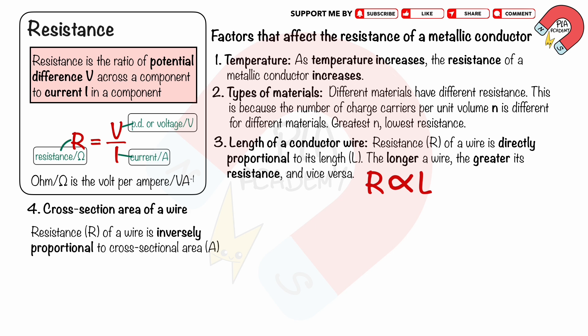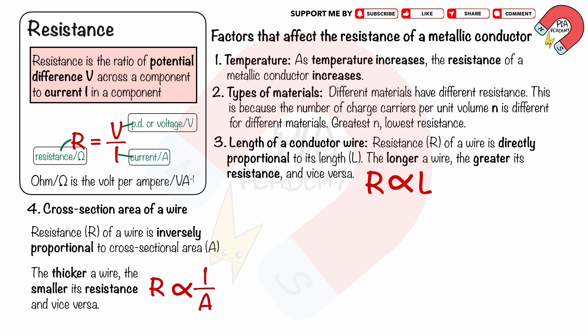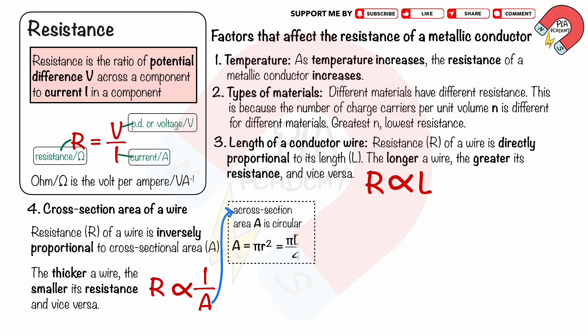Factor 4: Cross-sectional area of a conductor wire. Resistance R of a wire is inversely proportional to cross-sectional area A. The thicker a wire, the smaller its resistance, and vice versa. This is because there is more space for electrons, so more electrons can flow. The cross-sectional area A of a wire is circular, which is π r², or π D² over 4. So resistance is inversely proportional to radius R squared and also inversely proportional to diameter D squared.